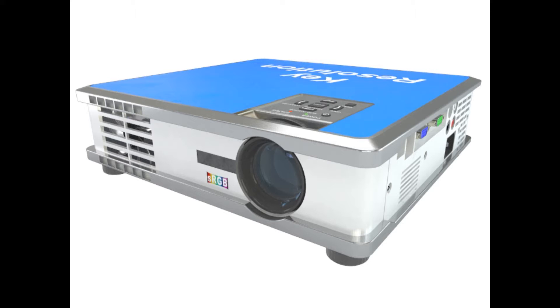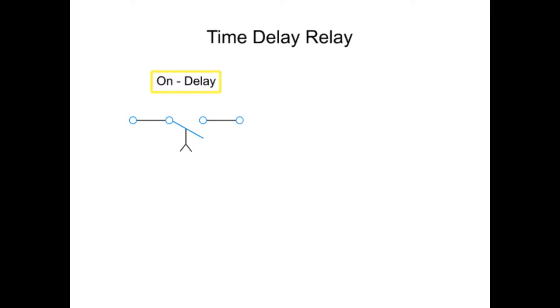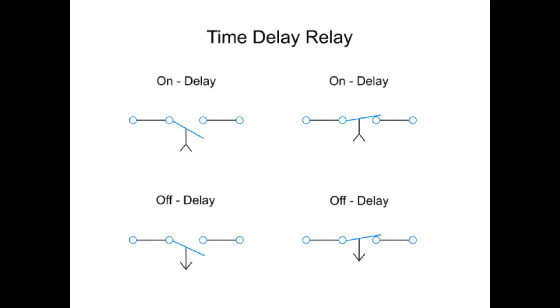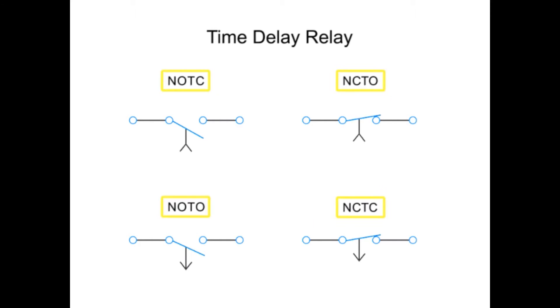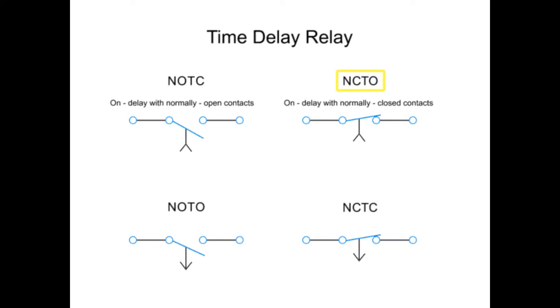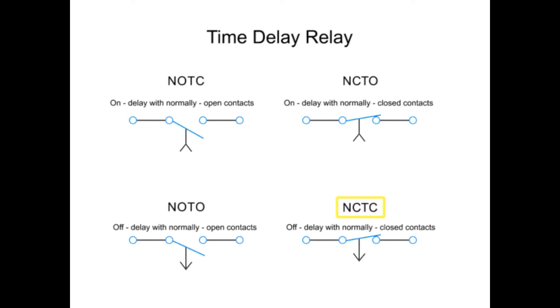Let's look at four basic types of relays. There are two types of relay functions — on-delay and off-delay — each with two types of contacts: normally open and normally closed, represented here by four symbols. NOTC functions as an on-delay with normally open contacts. NCTO operates as an on-delay with normally closed contacts. NOTO functions as an off-delay with normally open contacts. And NCTC operates as an off-delay with normally closed contacts.